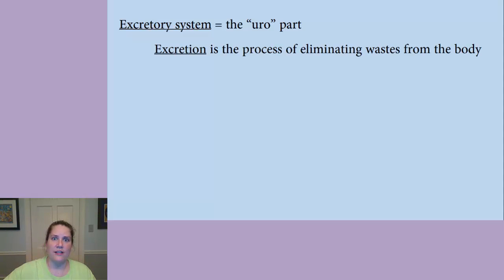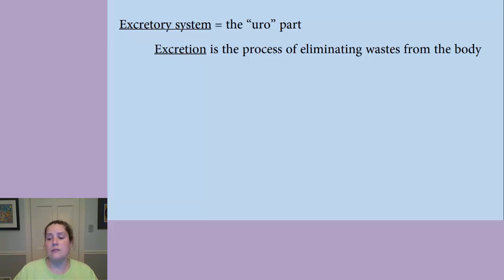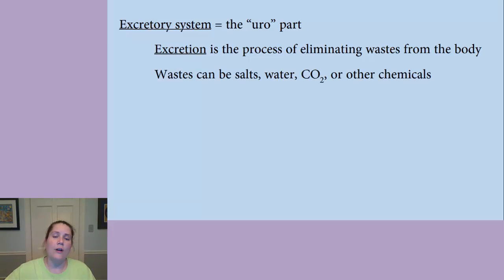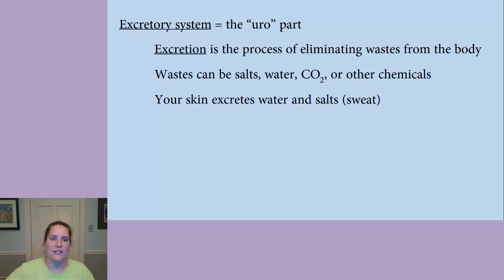We're just going to talk about the uro part today — the excretory system. Excretion is the process of eliminating wastes from the body. Our circulatory system takes wastes from our cells to, for example, our lungs to breathe out. Those wastes can also be things like salt, water — we might have too much water that we need to get rid of — carbon dioxide from our lungs, and other chemicals.